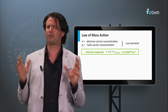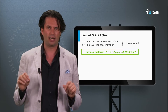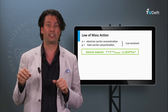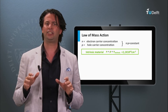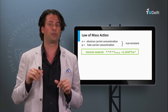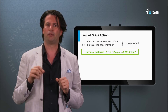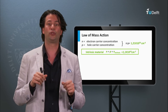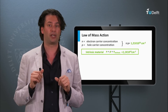Let's consider intrinsic silicon — silicon without any impurities. At room temperature, the electron density n and the hole density p are equal. For silicon, the electron and hole density is in the order of 1.1 times 10 to the 10th per cubic centimeter. This means the product n times p is equal to 1.21 times 10 to the 20th per square cubic centimeter.